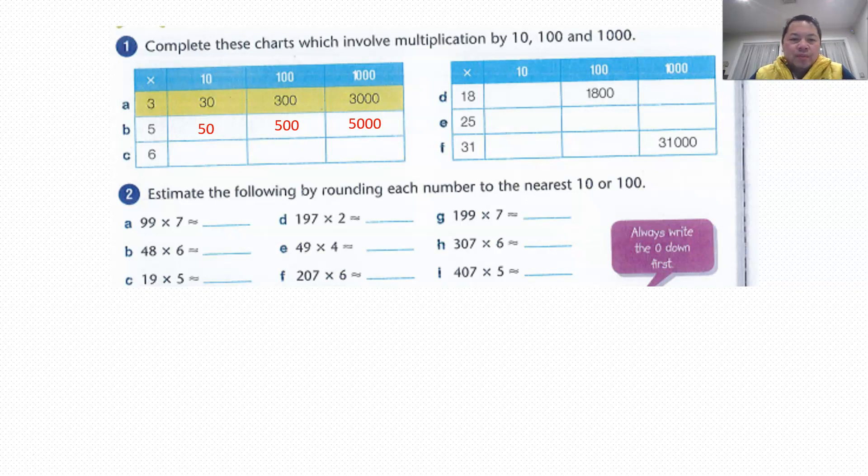Part 2, you're supposed to find an estimate. So why is it a good estimate? First, you are supposed to round off the first number, and then after that, you multiply with the second number. Whether you round off the first number to the nearest 100 or 10, depending on the number.